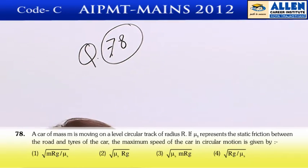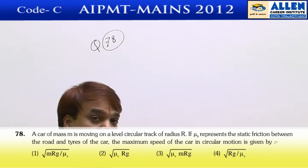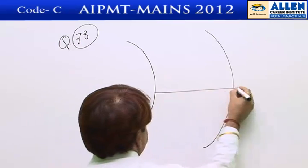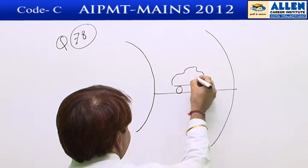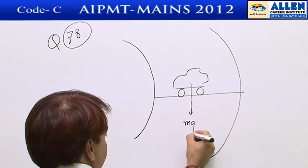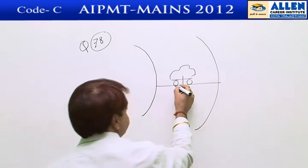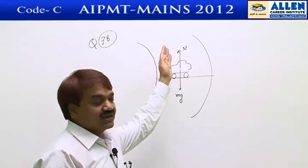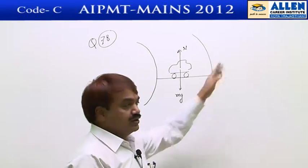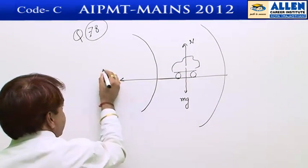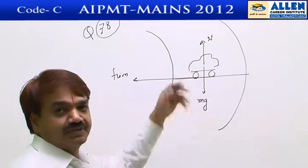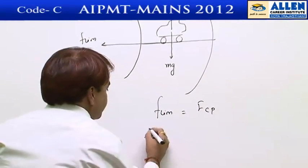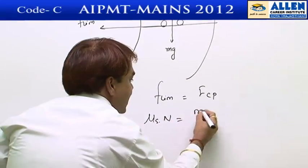Question number 78. A car of mass m is moving on a level horizontal circular track of radius r, and the coefficient of static friction is μs. The car's weight acts vertically downward and the normal reaction acts perpendicular to the contact surface. When any vehicle turns on a horizontal circular track, it tends to move outward, so limiting friction provides the necessary centripetal force.